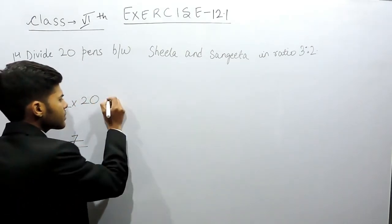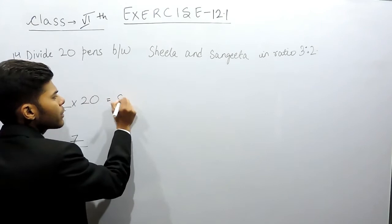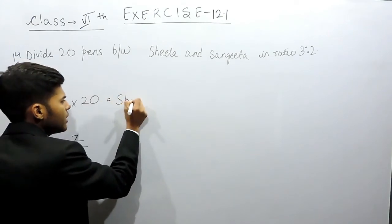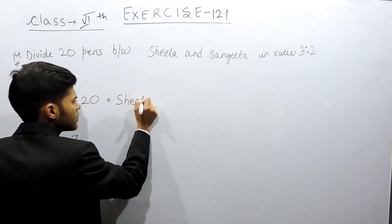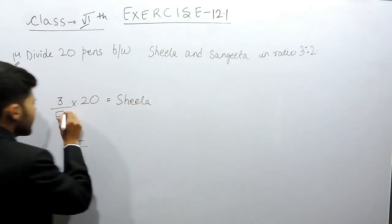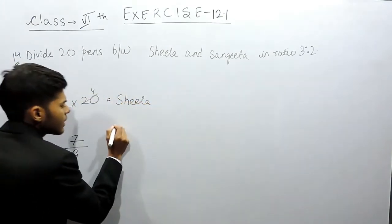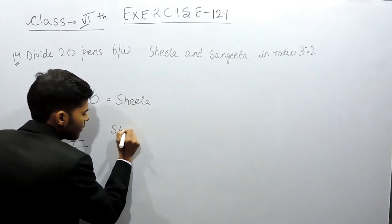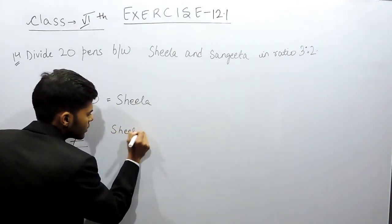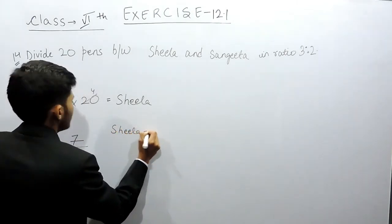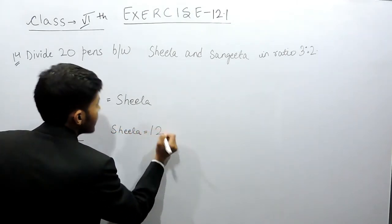So this will be equal to Sheila's pens. 3 by 5 — 5 goes 4 times into 20 — that means Sheila will get 12 pens.